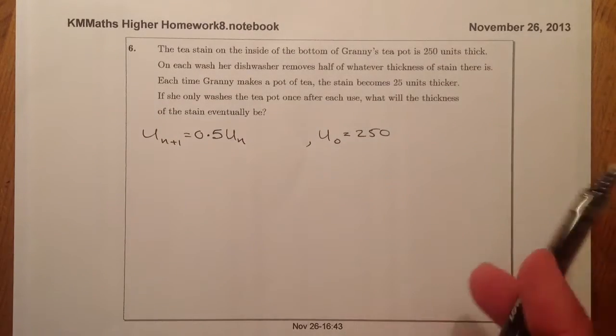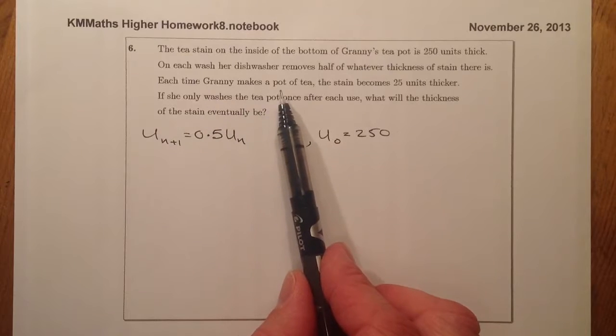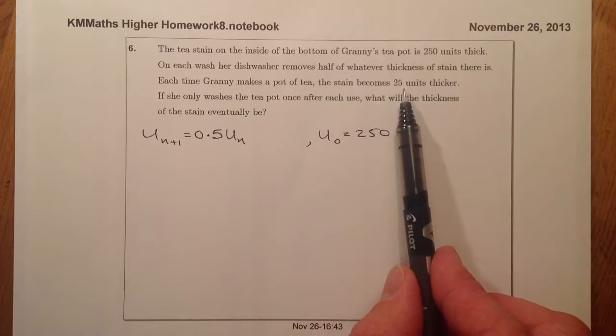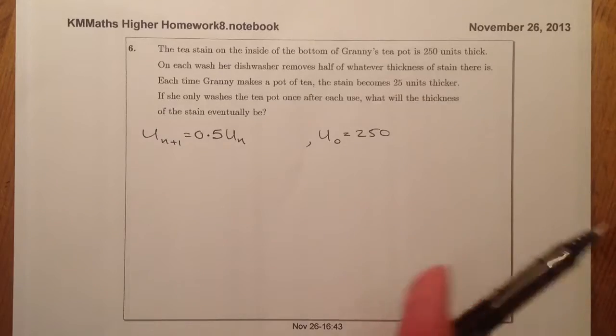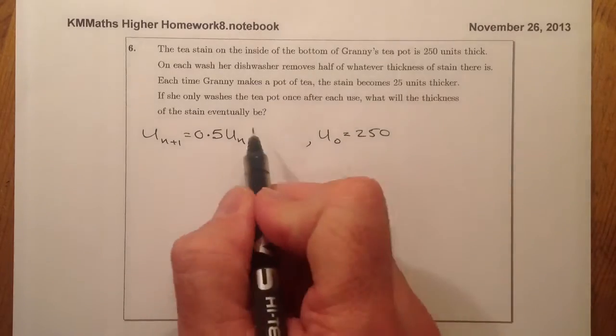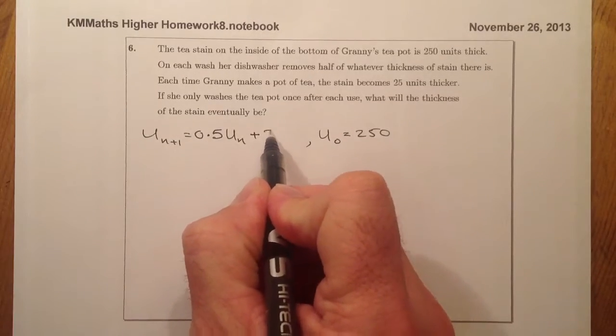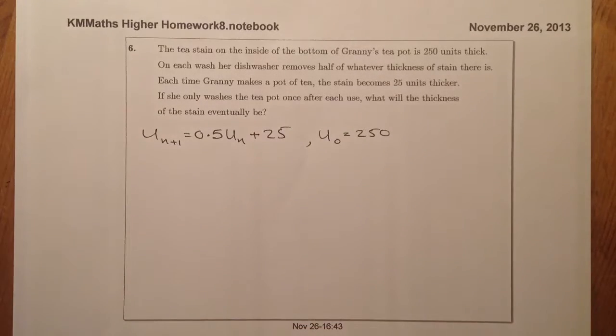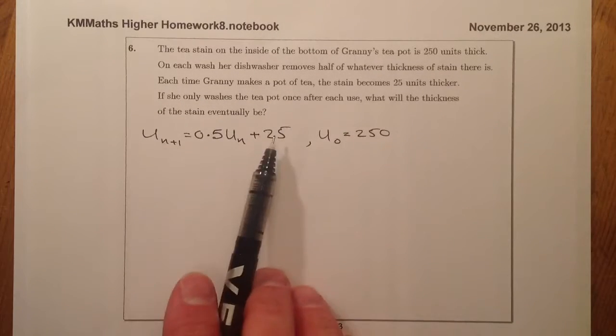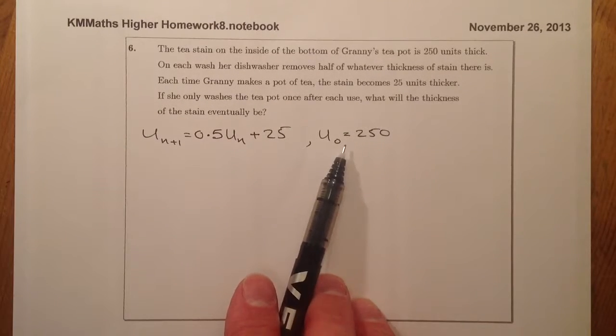And what I'm looking for is each time Granny makes a pot of tea, the stain becomes 25 units thicker. OK, and she only washes it once. So what we'll do here is add on 25. So that looks like my recurrence relation and my starting point there, my U₀ point.